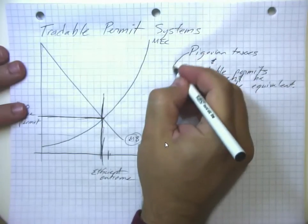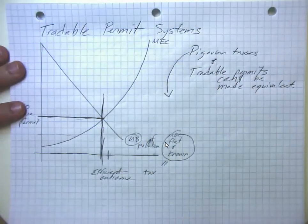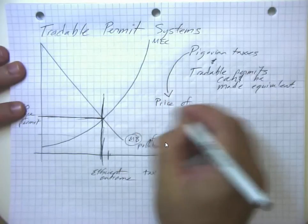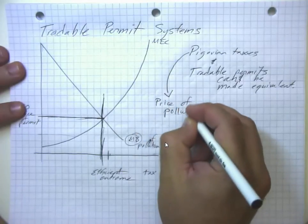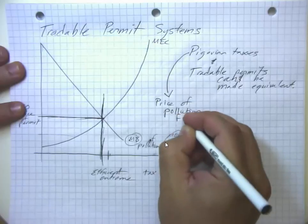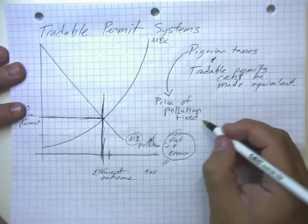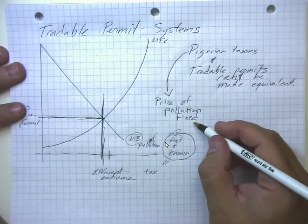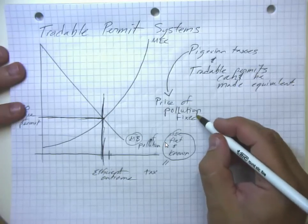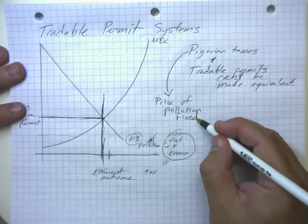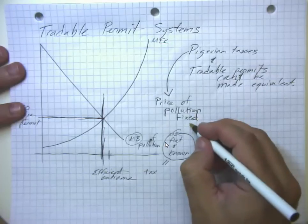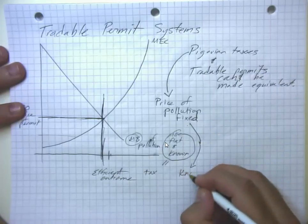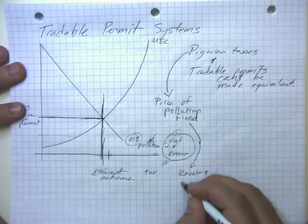With Pigovian taxes, we create a situation where the price of pollution is fixed. And so in that case, we know that there will always be some deterrent to pollute, but that deterrent to pollute won't get higher if pollution rises. So there's a known and constant deterrent to pollute.